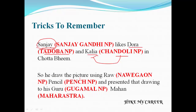So he draws the picture using a raw pencil. He likes Dora and Kaliya, and he draws the picture using a raw pencil. Raw means Navgwan National Park, and Pencil means Pench National Park. He draws the picture using a raw pencil and presents the drawing to his guru.